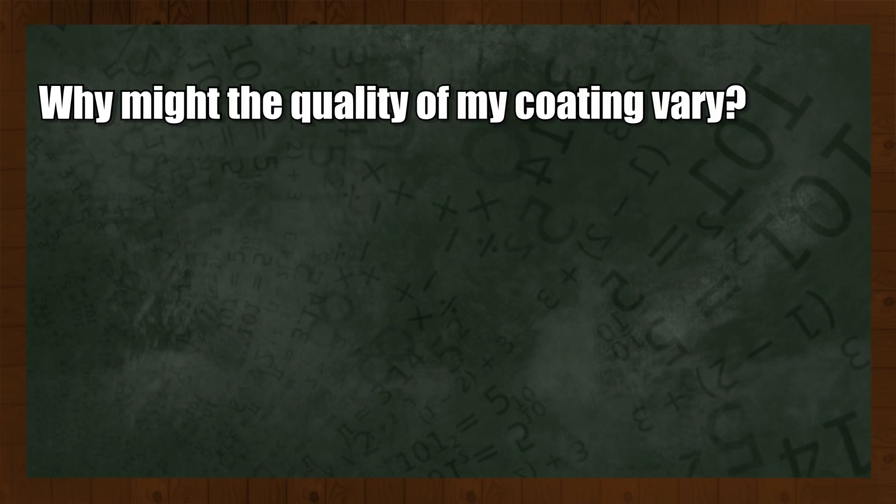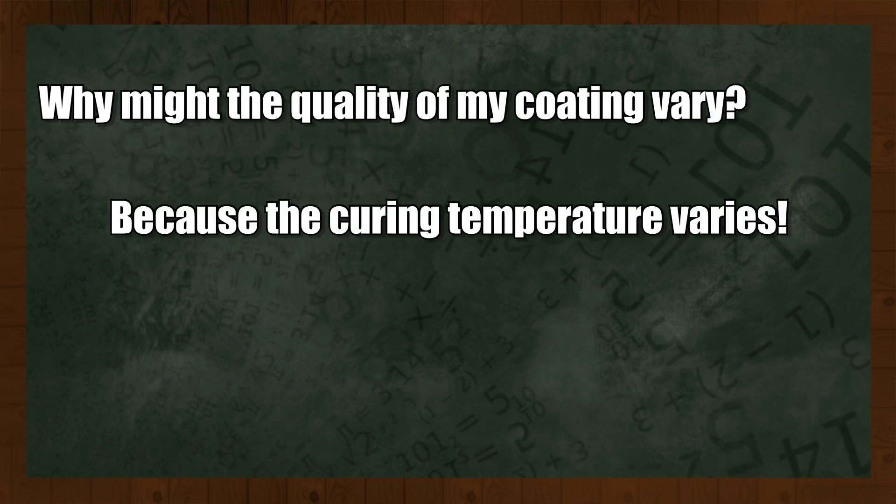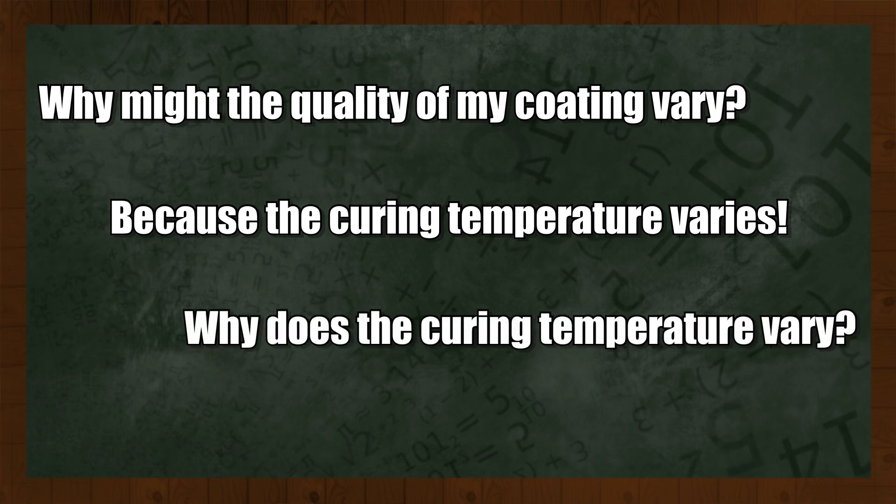For example: why might the quality of my paint vary? Because the curing temperature varies. Why does the curing temperature vary? By continuing to ask why, we can identify several underlying variables that are relevant for our experiment. Finally, you can use experimental design techniques like screening designs to screen your variables and test how strong their impact on the coating quality actually is.